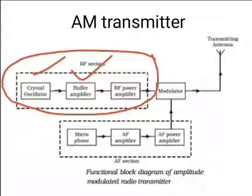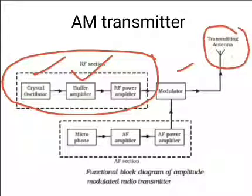The output of this stage is power amplified by the radio frequency amplifier and it is given to the modulator block. In the modulator, the radio frequency signal and the audio frequency signal are superimposed to produce the amplitude modulated wave. The output of this section is fed to the antenna, and the modulated signal is transmitted into space in the form of electromagnetic waves using the transmitting antenna.